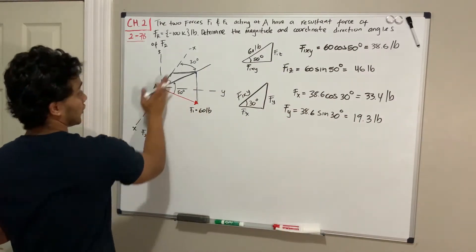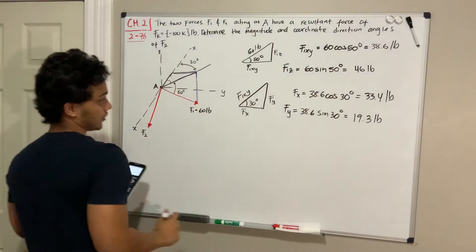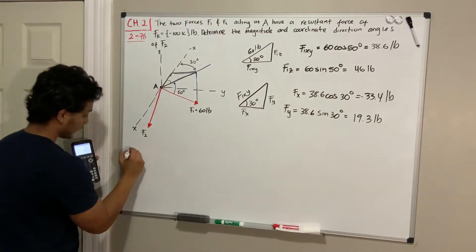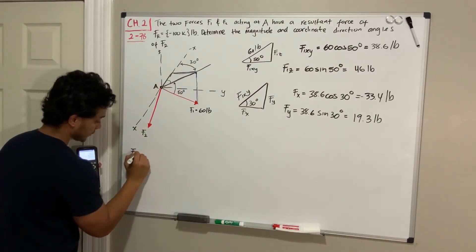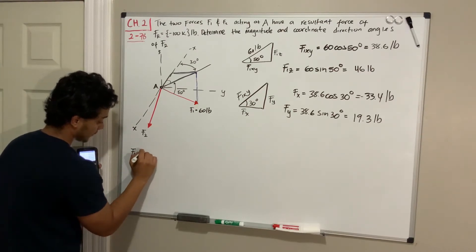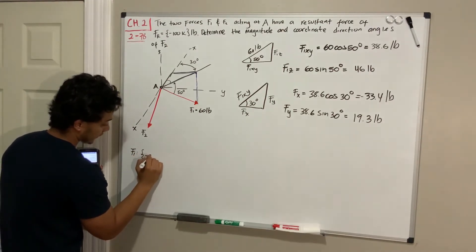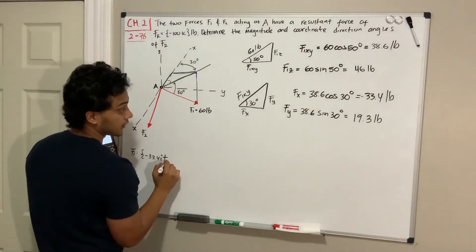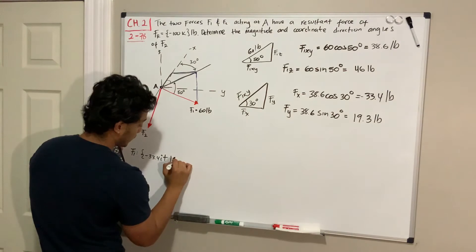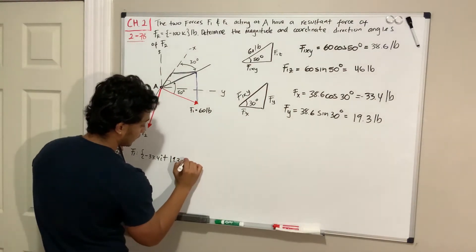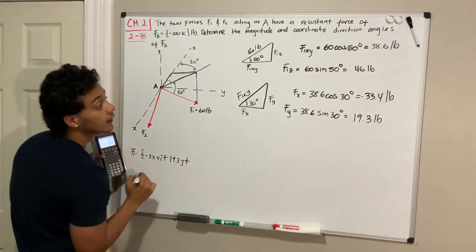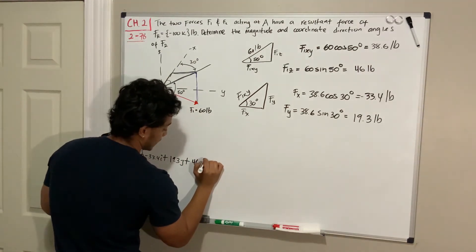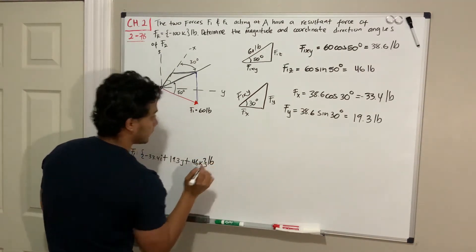Note that F1_x is going in the negative direction. So writing down F1 components: negative 33.4 in the x direction, plus 19.3 in the y direction, plus 46 in the z direction — all in pounds.